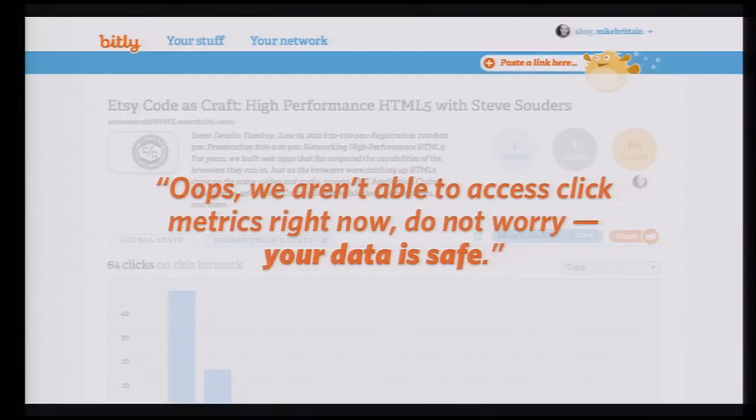Another case of great messaging I saw was from Bitly — this message came from their older interface. The right messaging for visitors during failure is really an art form, and it's part of resilience. When I tried to access some click data, it was clear something was going wrong. What was wonderful is that not only did they convey that something was wrong with the back-end service, but they reassured me that the data I'd stored in the service was still there and would be there when the service recovered.